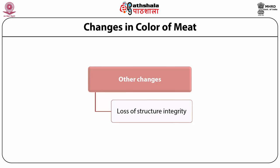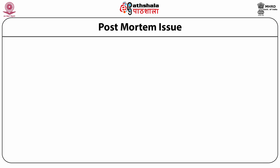Calpains — calcium-activated proteins — degrade protein during cooler aging. Calpstatins inhibit the action of calpains. Brahman cattle are naturally tougher because of their higher content of calpstatins.